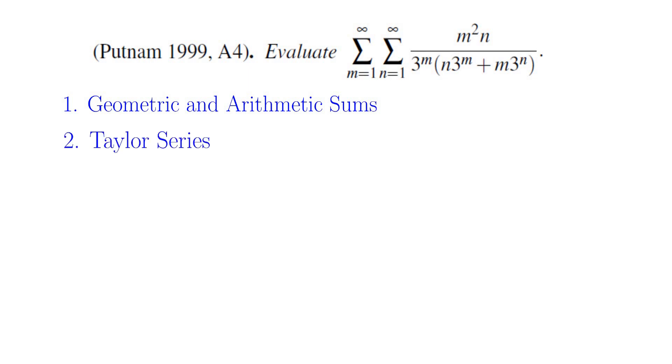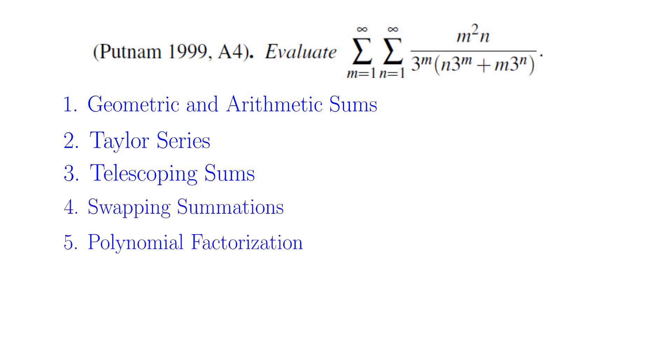The second method is using Taylor series. The next one is using telescoping sums. The next one is swapping summations and the last one is polynomial factorizations.